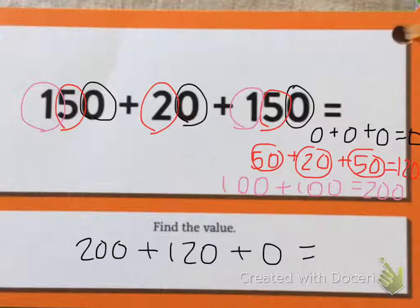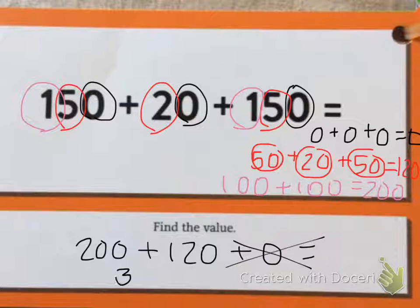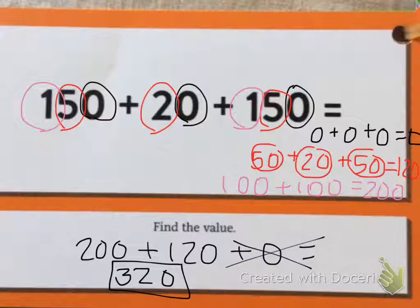So I know that 200 plus 120, I can just get rid of the zero, is 320. That is our answer, 320.